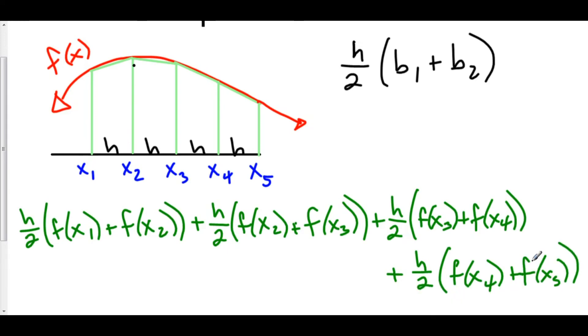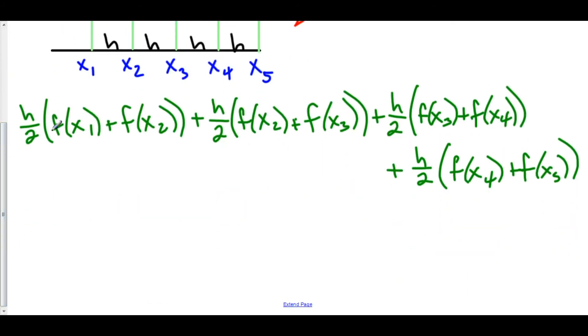This is an approximation for the area beneath the curve using trapezoids. Now, take a look at what we can do here. We have h over 2 multiplied by each of these different heights added together. Why don't we just factor out an h over 2?